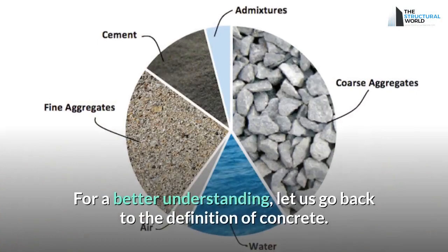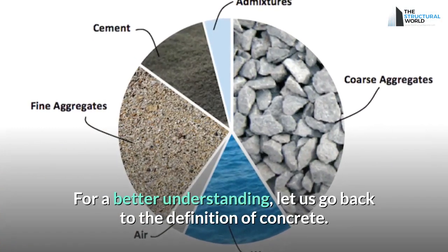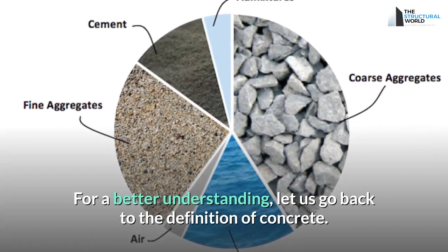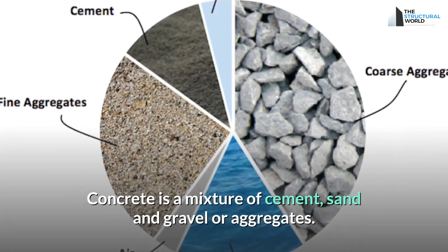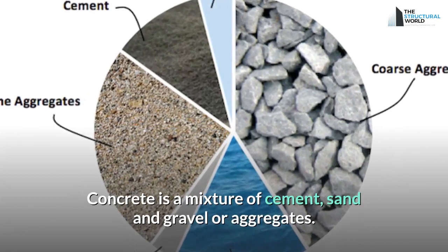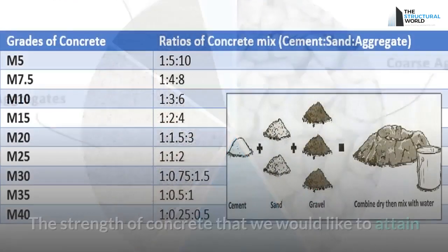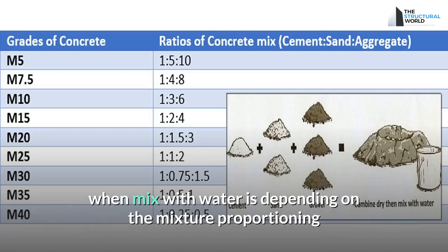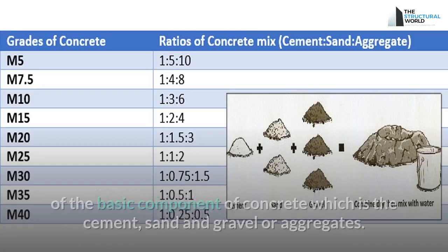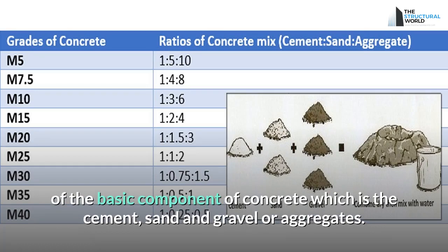For a better understanding, let us go back to the definition of concrete. Concrete is a mixture of cement, sand, and gravel or aggregates. The strength of concrete that we would like to attain when mixed with water depends on the mixture proportioning of the basic components: cement, sand, and gravel or aggregates.